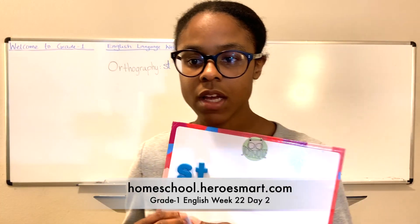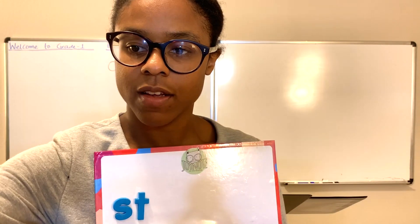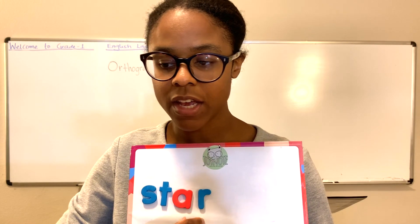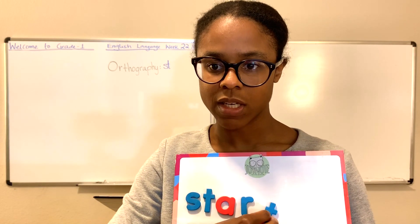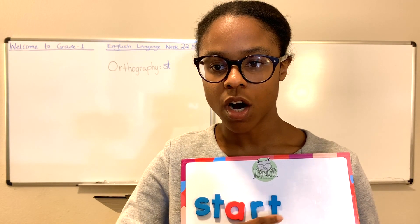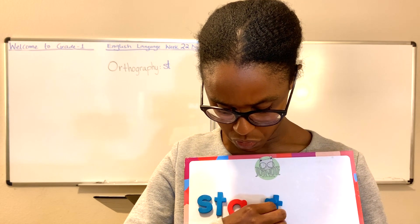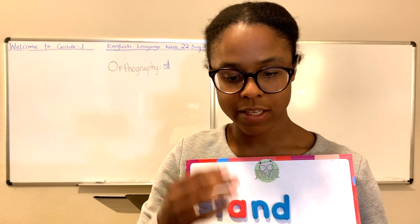Here we have the blend S-T, and we're going to do a few words. Let's start with S-T with the vowel A. What about 'start'? S-T-A-R-T. Remember that A-R makes the sound R. So we have S-T, R-T — start. What about S-T-A-N-D? That says 'stand.' Can you stand on your own two feet? Stand.